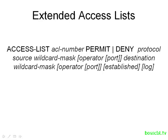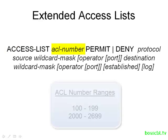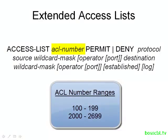Here we have the structure of the extended access list, and you can see it's a lot bigger than your standard access list. We start off with the same command — access list — and then we have to specify a number. However, this time the ranges are different. For an extended access list, the numbers can be between 100 and 199, or 2,000 and 2,699. You can choose from either of those two ranges.